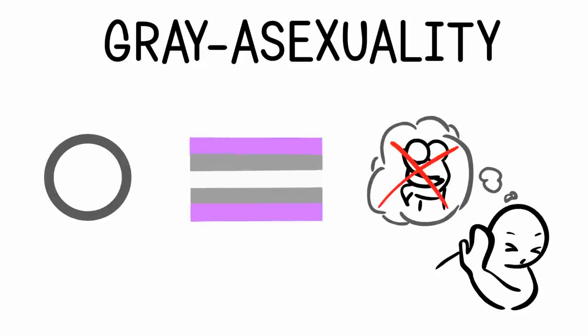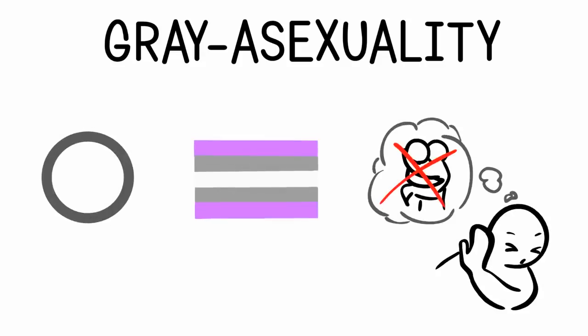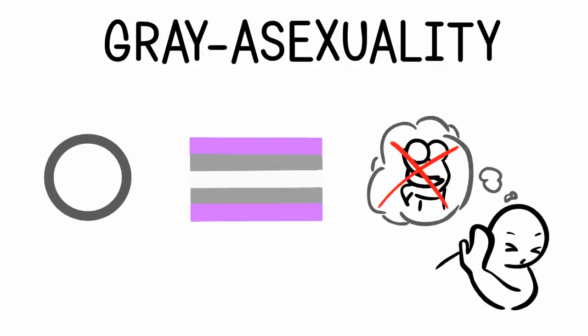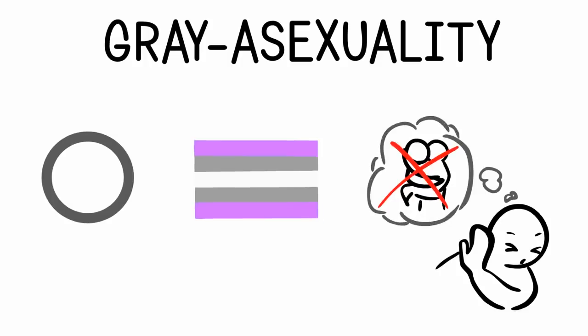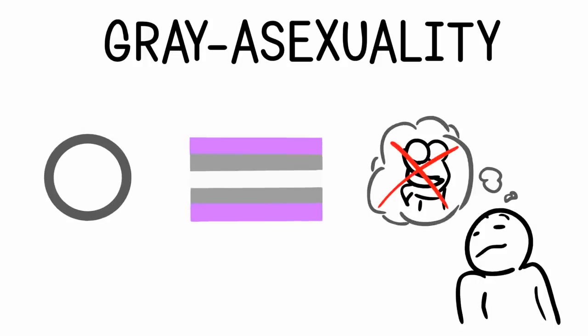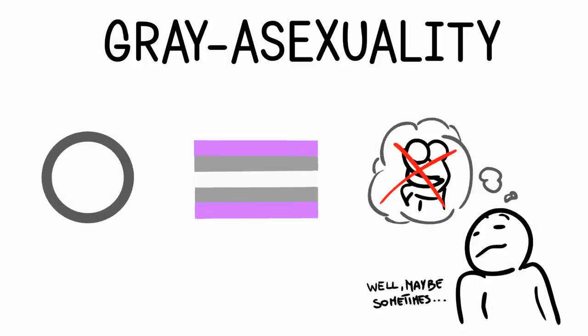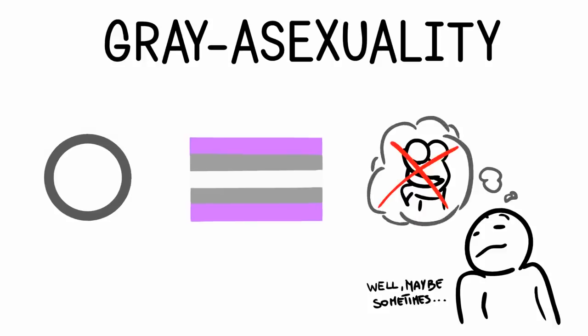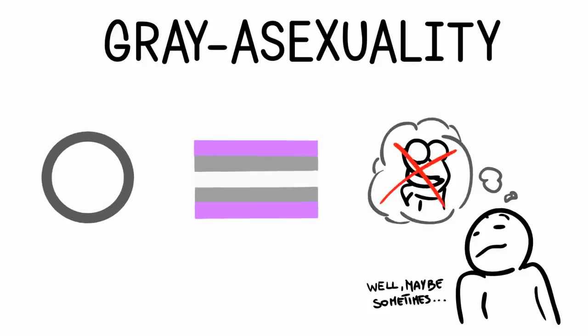7. Gray Asexuality. This is similar to the previous sexuality. However, instead of never experiencing sexual attraction, someone who is graysexual may very rarely experience sexual attraction. They are still valid under the asexuality umbrella, despite occasionally experiencing sexual attraction.